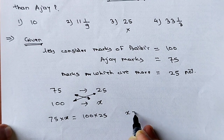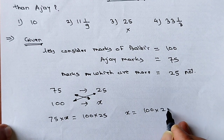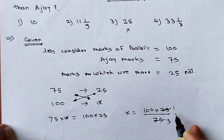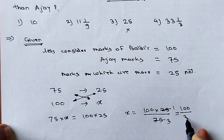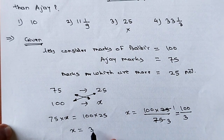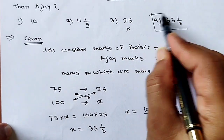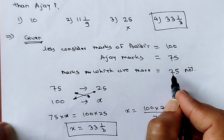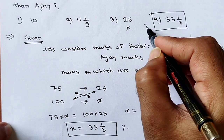Option 4 is 33 whole 1 upon 3, which is in percentage. The other option of 25 is just in numbers, not percentage. So option 4 is our correct answer.